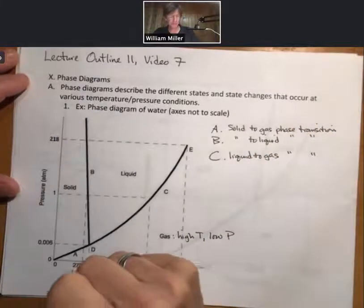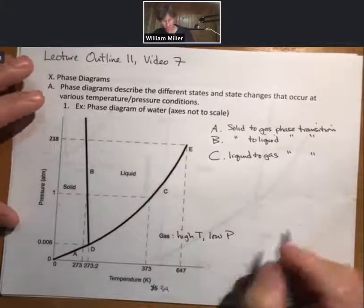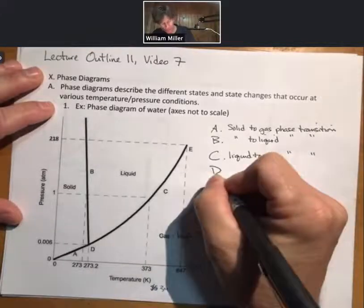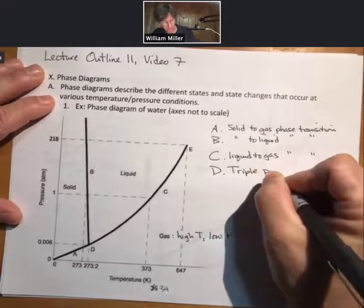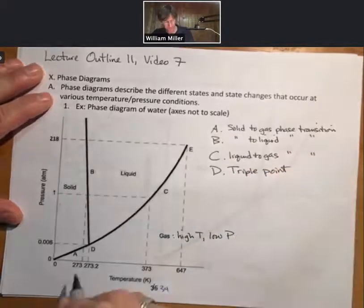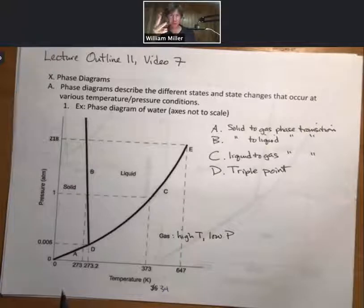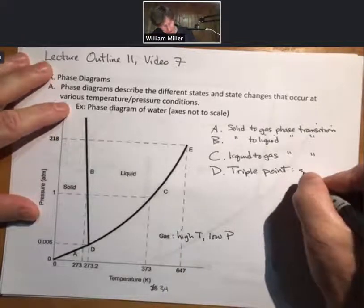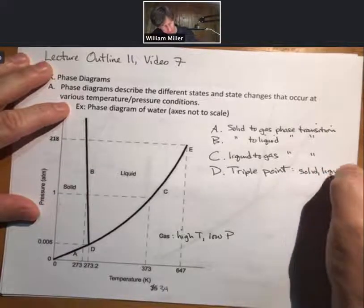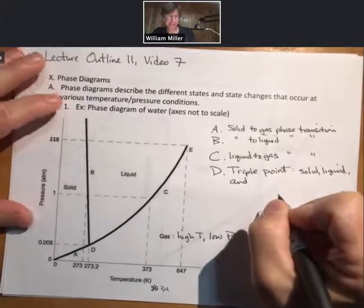So those are phase or state transitions. There are two other points on this. One is point D. Point D is what's called the triple point. It is the one combination of temperature and pressure at which solid, liquid, and gas—triple phases—solid, liquid, and gas coexist.